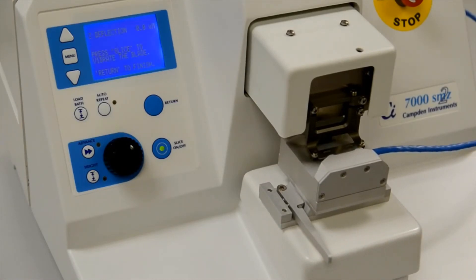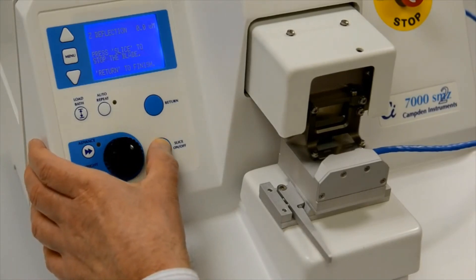The current blade alignment error will now be displayed so press the Slice On-Off key again to stop the vibration.